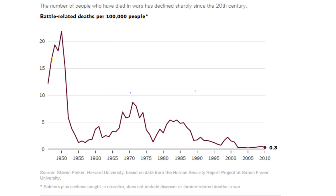Looking particularly since World War II, there is a general trend of reduction in battle-related deaths per 100,000 people. If we backed up to World War II, this chart would be completely off the map. We see spikes with the Korean War, the Vietnam War, and in the 1980s with the Iran-Iraq War, the Soviet-Afghanistan War, and smaller guerrilla conflicts in South America. Then another spike with the rise of terrorism, particularly 9/11, and arguably another spike of conflict in the last decade or so.